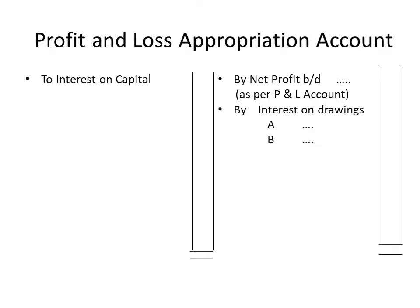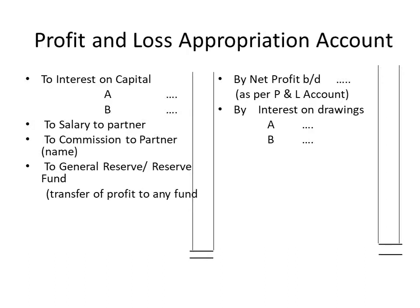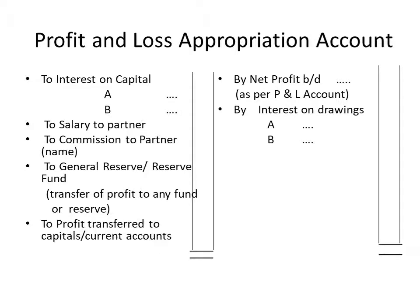While on the debit side, we have interest on capital, salary of partners, commission to partners, and transfer of profit to reserve or reserve fund. So that means the profit left after allowing interest on capital, salary, commission, and transfer to general reserve is distributed between partners in the profit sharing ratio.